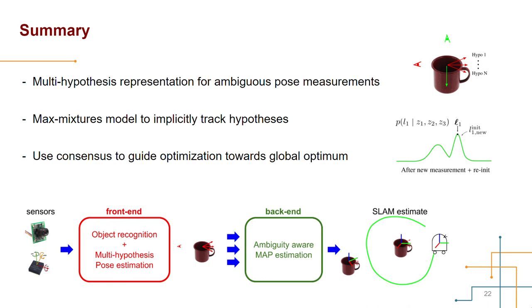To summarize, we developed a real-time, robust object SLAM system that is aware of object pose ambiguities. It uses multi-hypothesis representation for object poses in ambiguous measurements. The max mixtures model is used to implicitly keep track of the pose hypothesis, and we use consensus over the hypothesis to guide the solution towards the global optimum. The system is demonstrated to attain improved SLAM estimation performance in two object SLAM experiments. For more information, we encourage you to check out our paper.